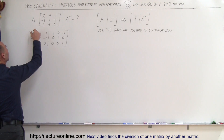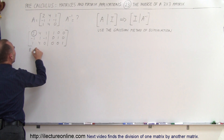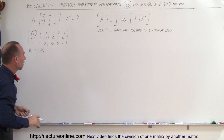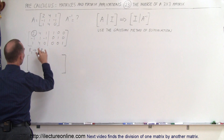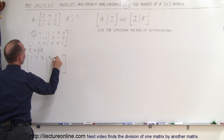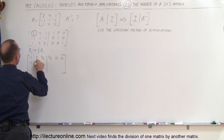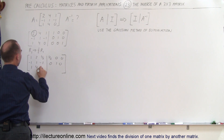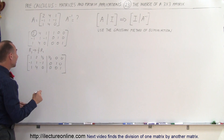So the first thing we'll want to do is turn this into a 1. We can do that by taking the first row and replacing it by one half times the first row — simply multiplying the first row by one half. When we do that, the top row becomes: 1, 2, one half, one half, 0, and 0. The second and third rows stay the same. Alright, that's our first step — that was easy.